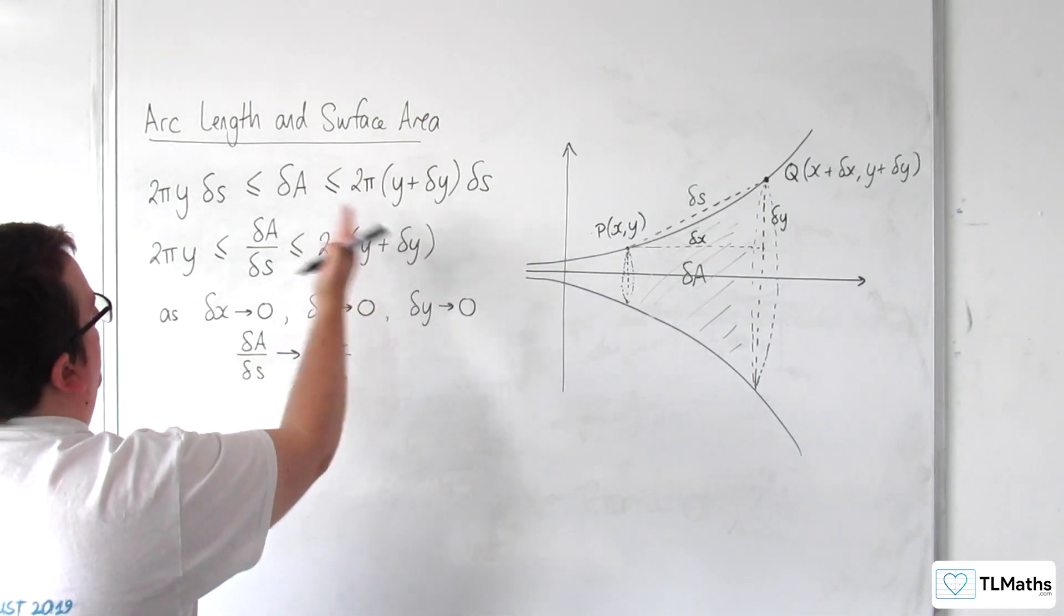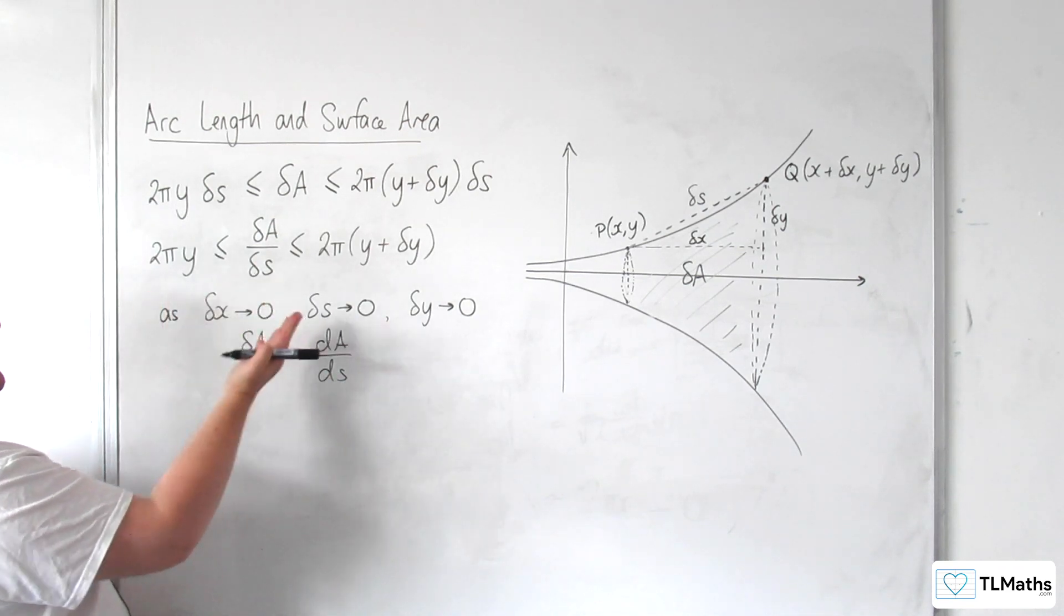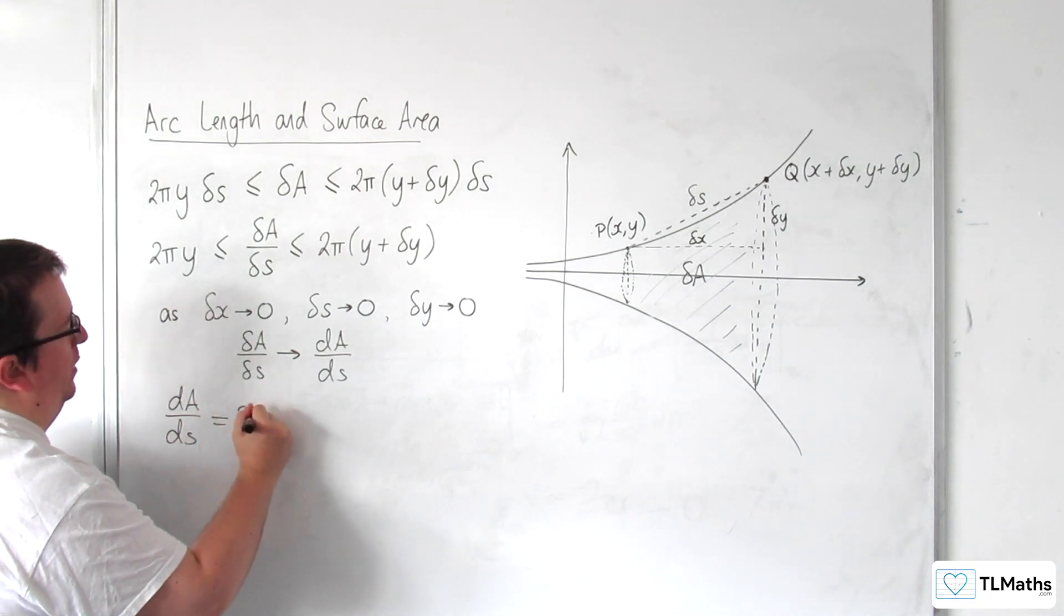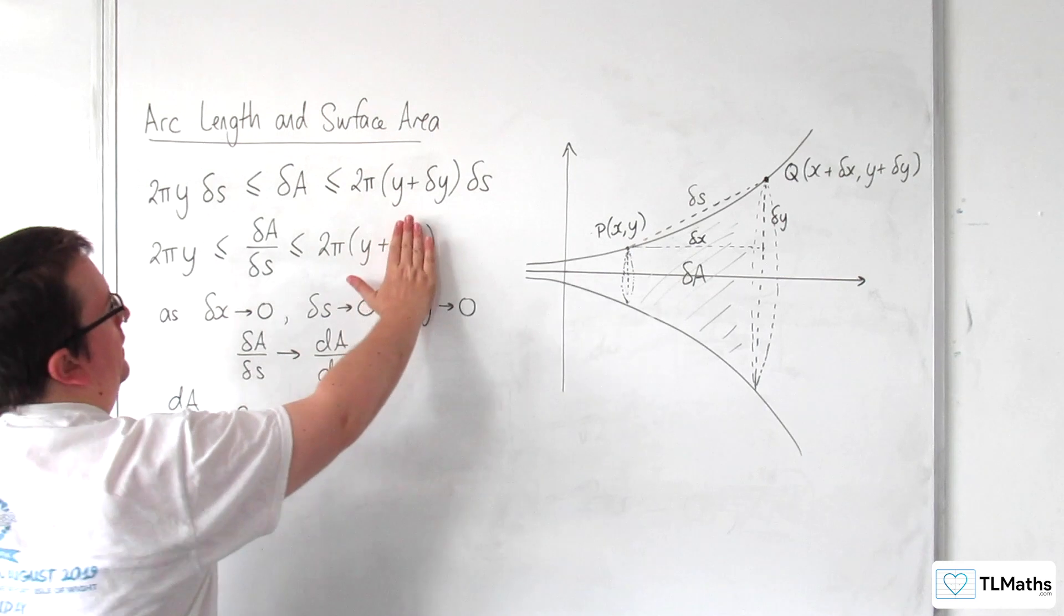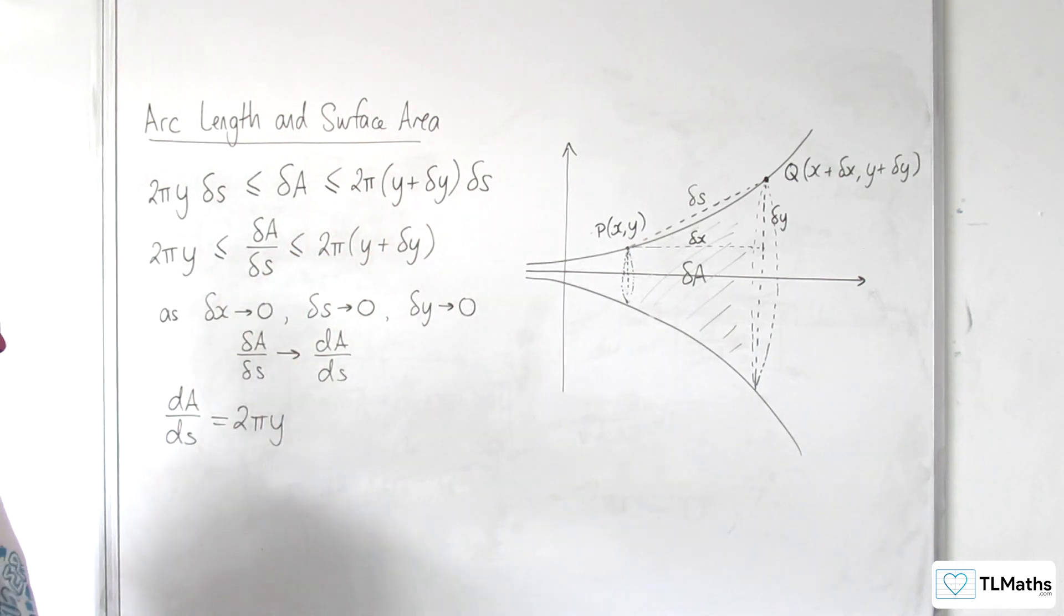So delta y is tending to 0, and so what we're going to be left with is dA/dS is equal to 2πy, because if that's tending to 0 then you've got both sides the same for your inequality.